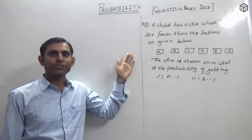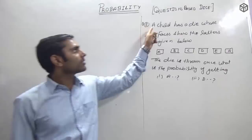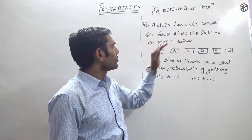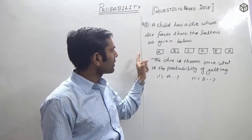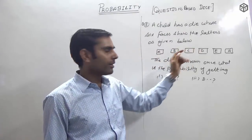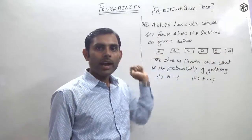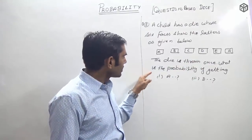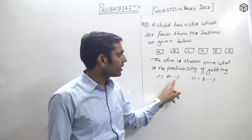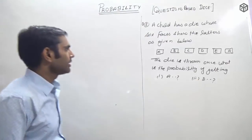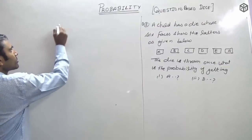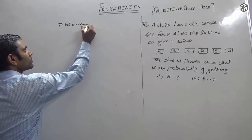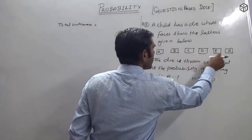Now the second question: a child has a die whose six faces show the letters A, B, C, D, E, and A. The die is thrown once. Total outcomes in the experiment: 1, 2, 3, 4, 5, 6 — so 6 outcomes. Clear friends.